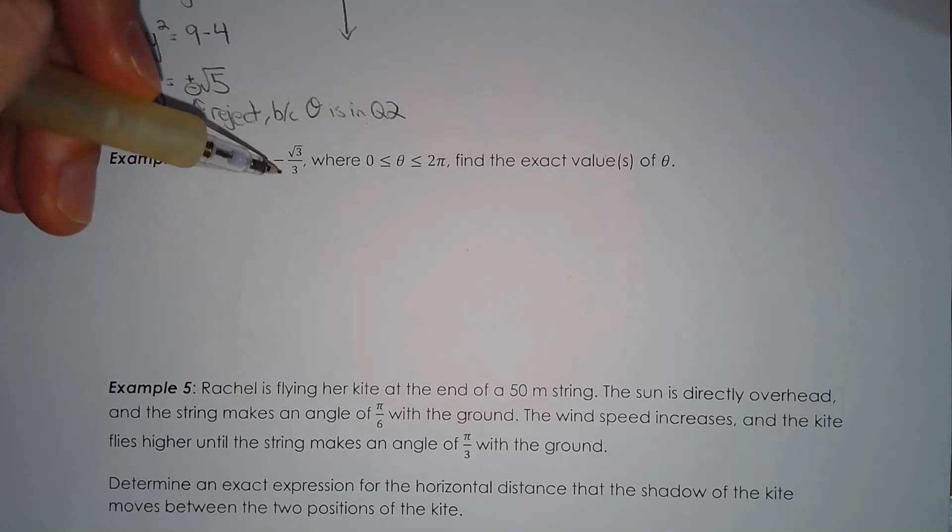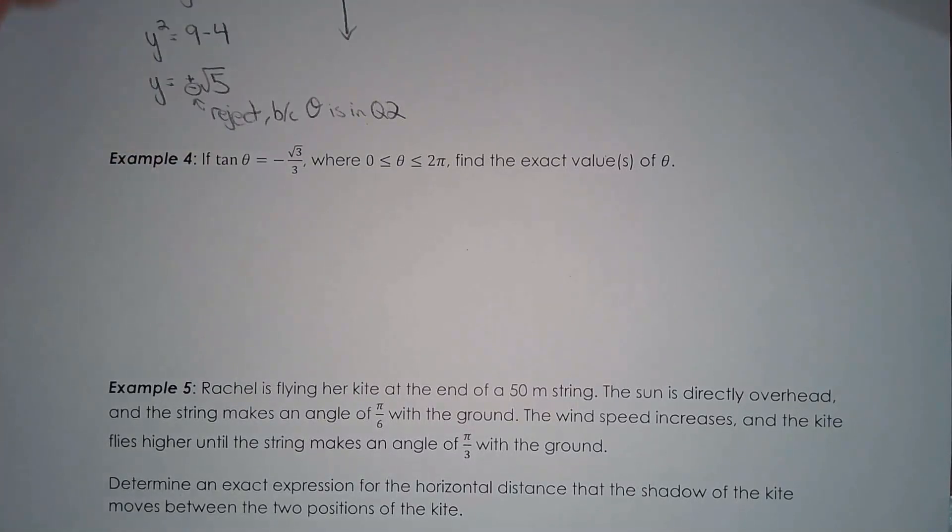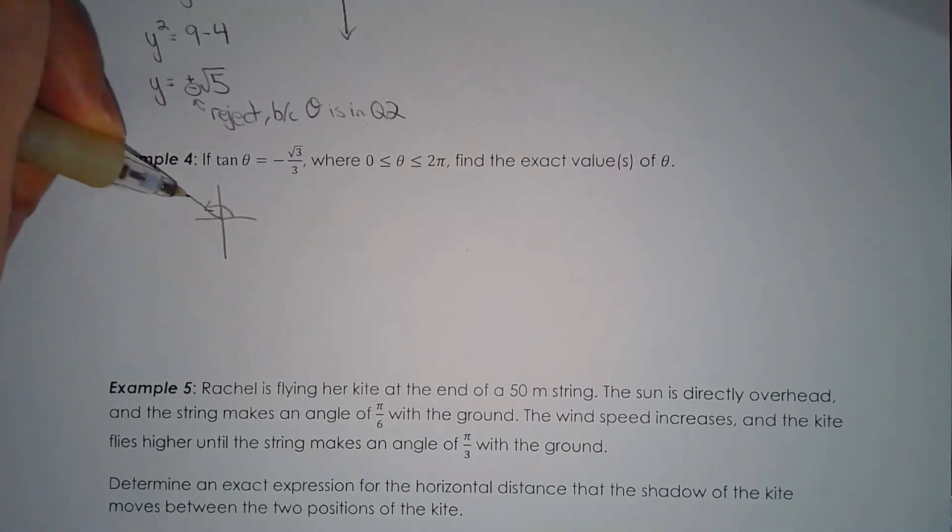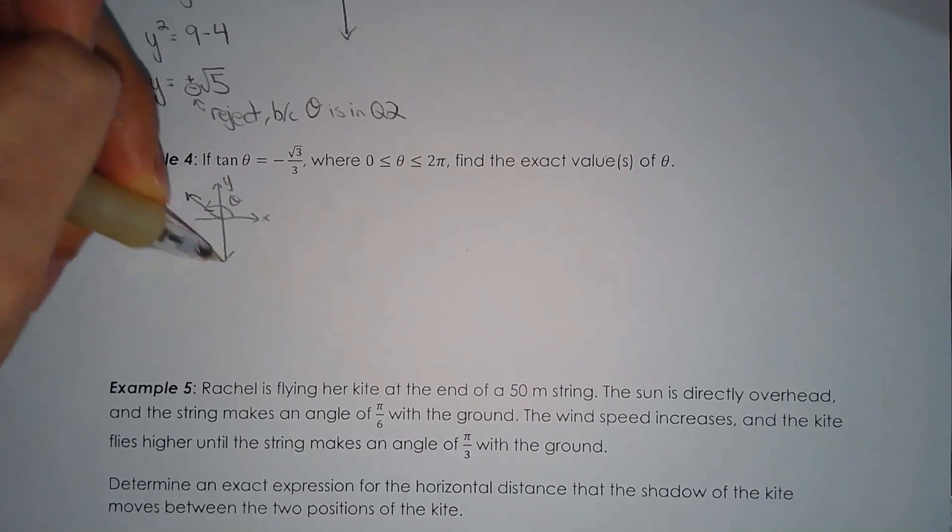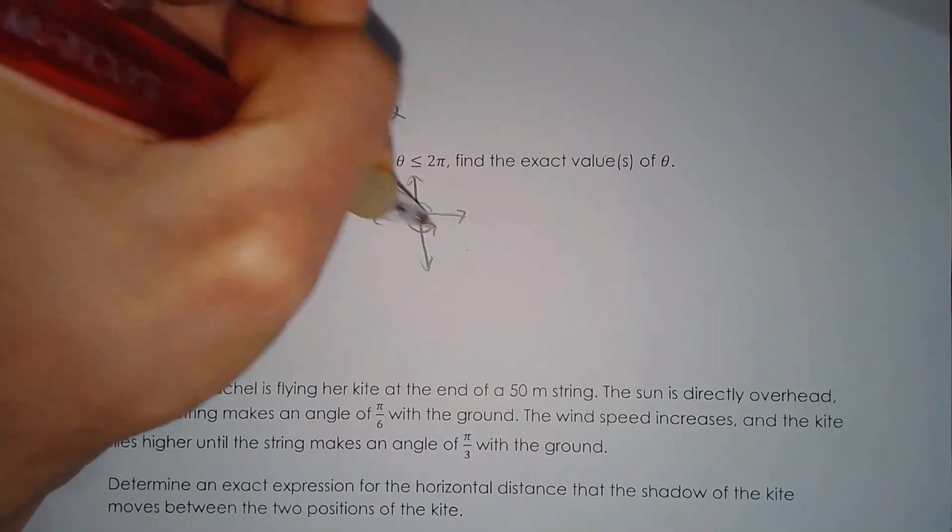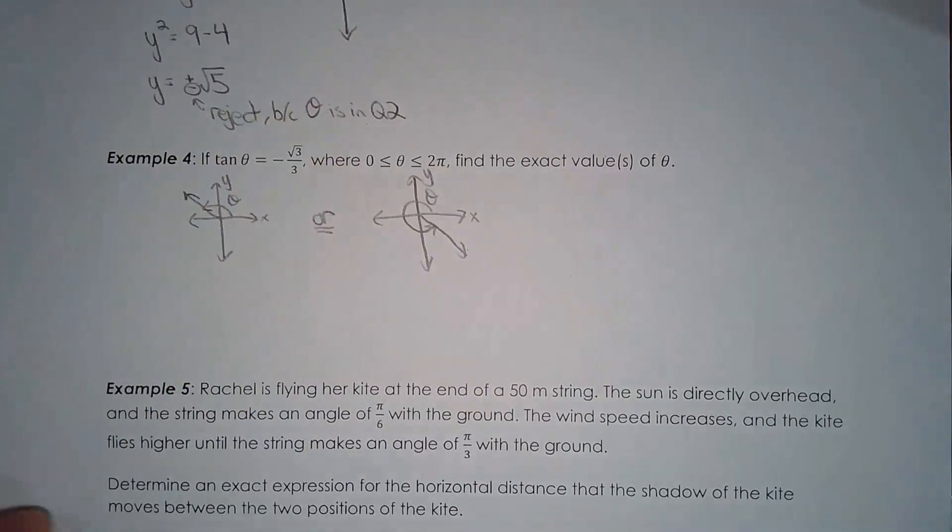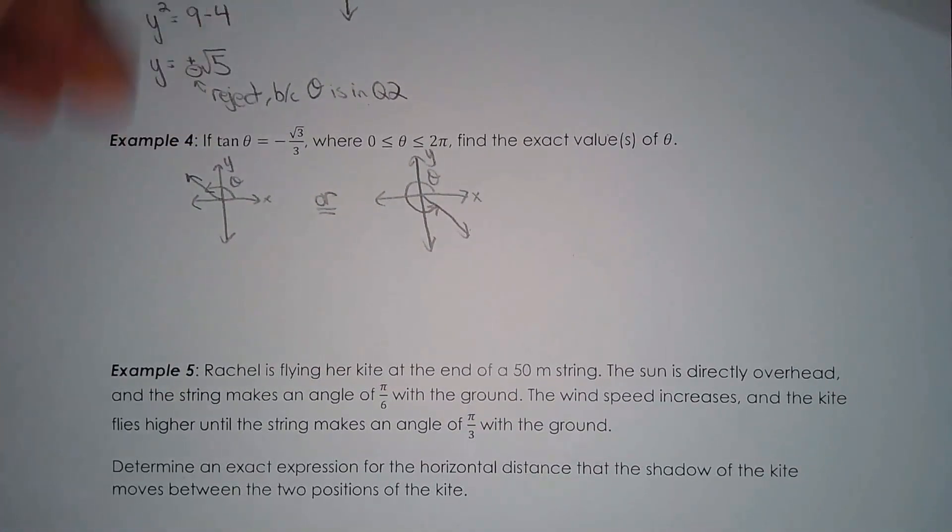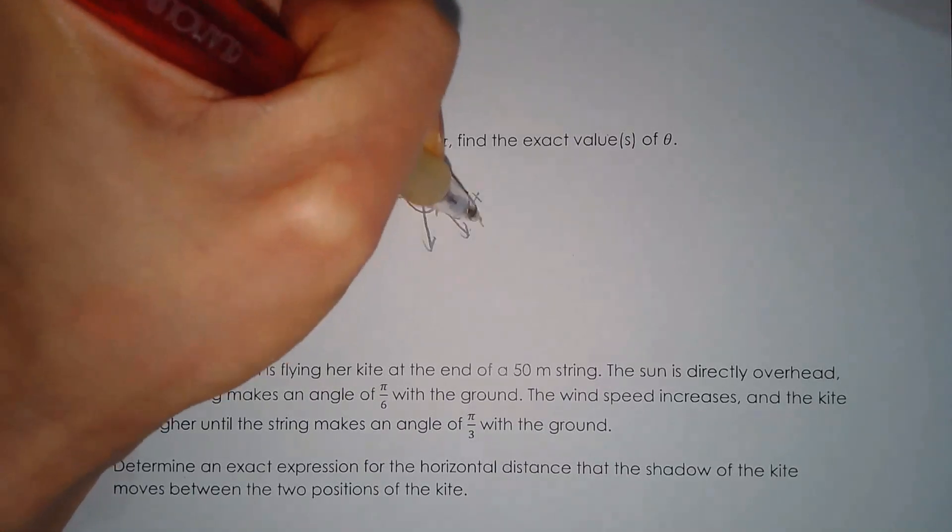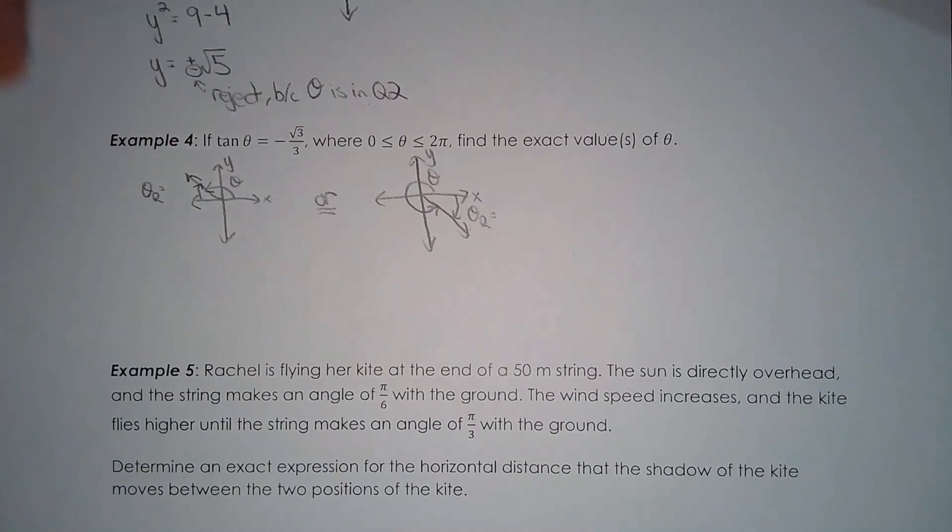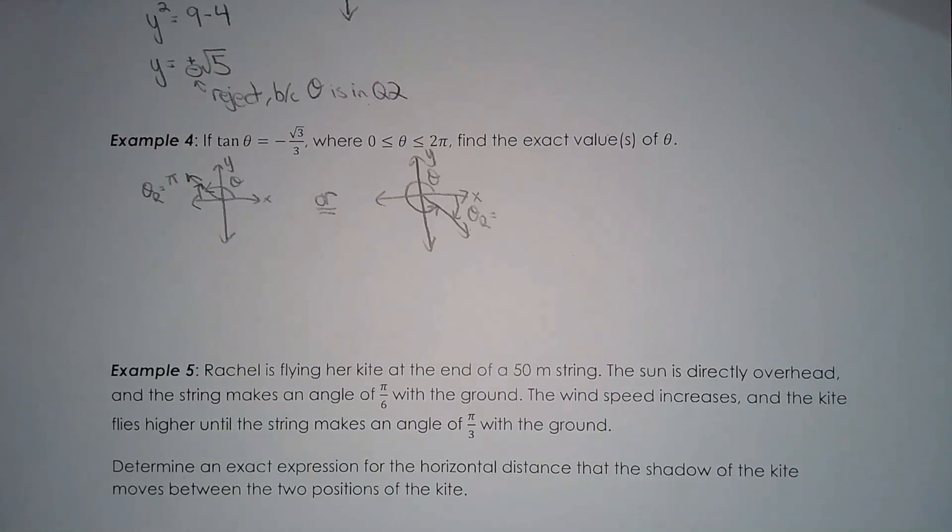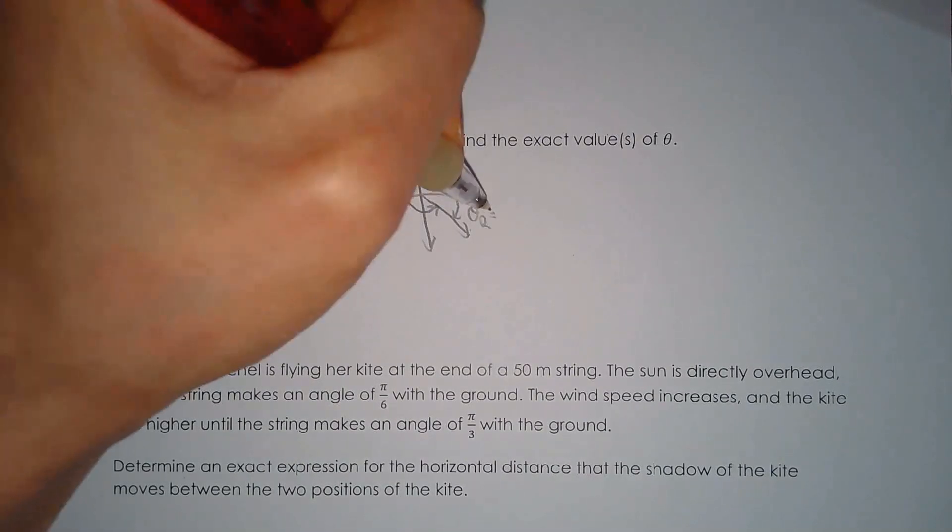Now, because the ratio is root 3 over 3, we're expecting exact values. So when you see root 3 over 3, that should come to you right away. They tell me that tan theta is negative root 3 over 3. So I'm going to draw two diagrams because theta can either be in the second quadrant or it could be in the fourth quadrant. Theta could be in the second quadrant or the fourth quadrant because they told me the ratio is negative. Now, to find out the reference angle, I look at the magnitude of the ratio, root 3 over 3. If the magnitude of the ratio is root 3 over 3, the reference angle must be pi over 6.